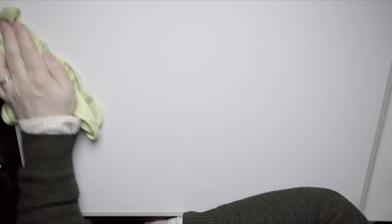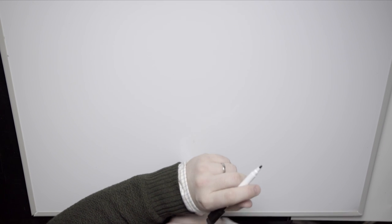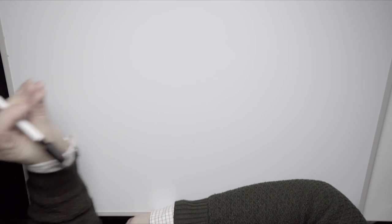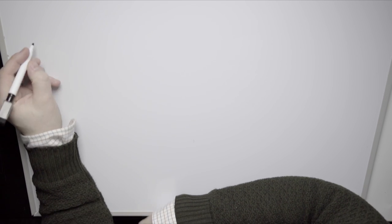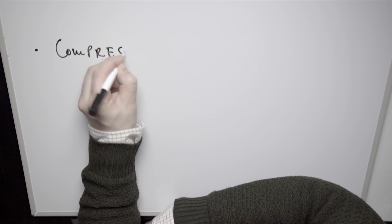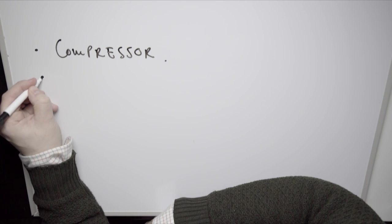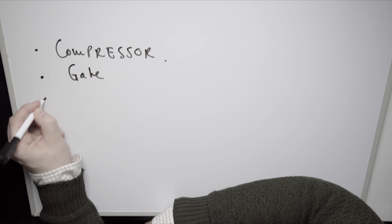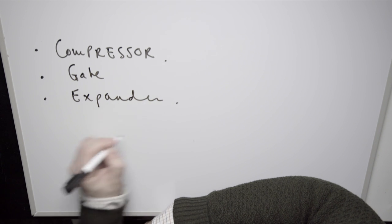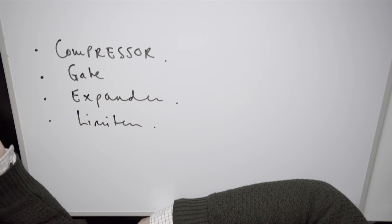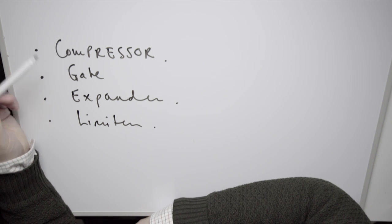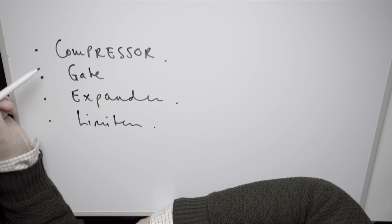Dynamics processing, certainly with a single-band dynamics processor, is to do with level. If you can get a reasonable comprehension of what a dynamics processor does, you will get much better-sounding audio. There are essentially four different kinds in the dynamics processor family: the compressor — probably the most common, and what we'll concentrate on today — the gate, the expander, and the limiter.